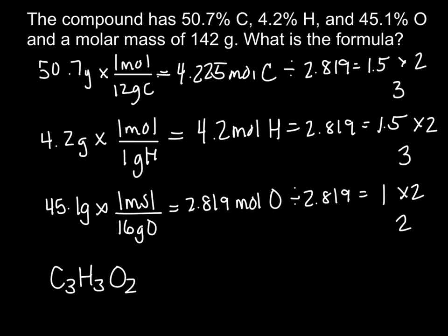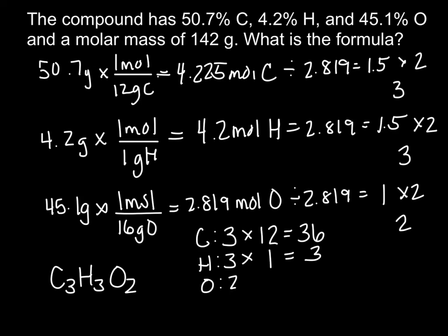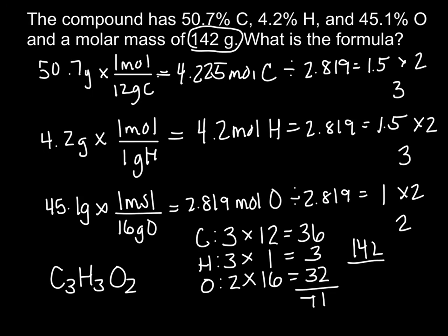Now I calculate the molar mass of the empirical formula C3H3O2: 3 × 12 = 36, plus 3 × 1 = 3, plus 2 × 16 = 32, giving a total of 71 grams per mole. I take the given molar mass of 142 and divide by 71, which gives 2. Multiplying all subscripts in the empirical formula by 2 gives a molecular formula of C6H6O4.